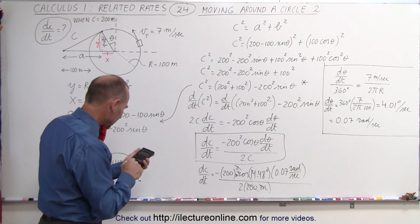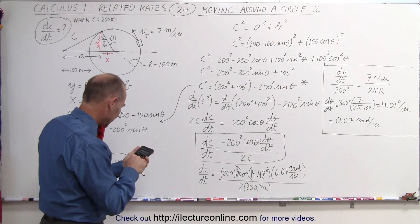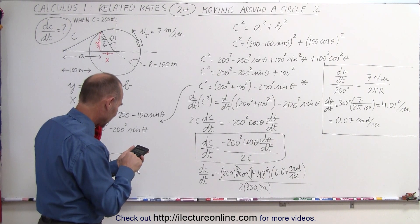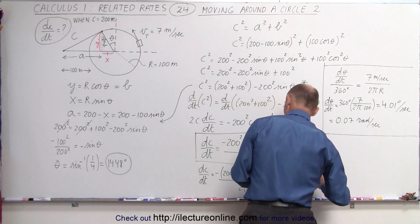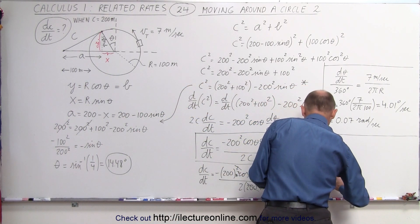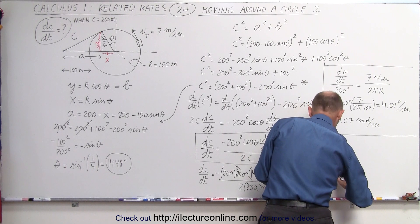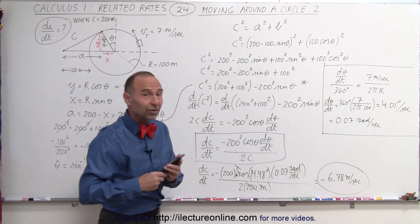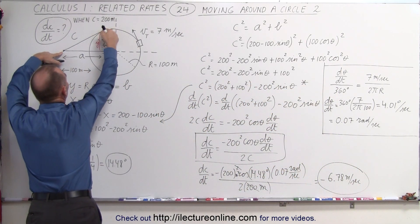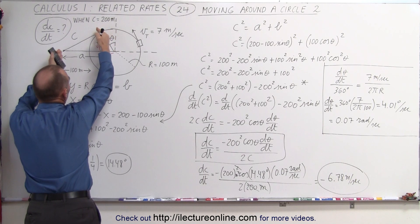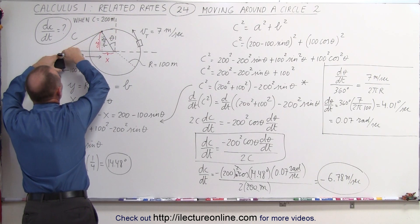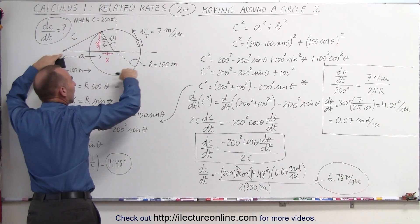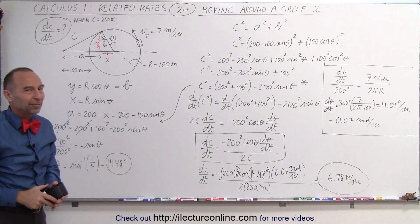Working it out: 200 × cos(14.48°) × 0.07 / 2 ≈ −6.78 meters per second. That's the closing speed — the object is approaching this external point at 6.78 m/s. It's negative because the distance is decreasing. That's how fast this object is approaching the external point when c = 200 meters and the tangential speed is 7 m/s.